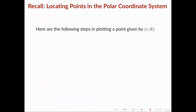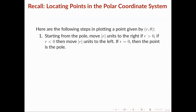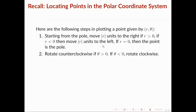Here are the steps in plotting a point given by (R, theta). First, starting from the pole, we move |R| units to the right if R is positive. If R is negative, then we move |R| units to the left. If R is zero, then the point is the pole. Next, we rotate counterclockwise if theta is positive. If theta is negative, then we rotate clockwise.